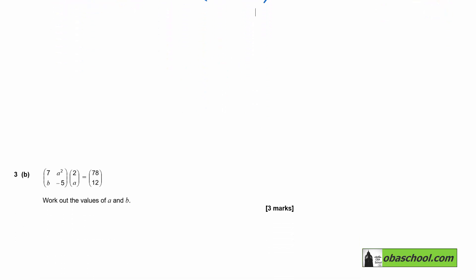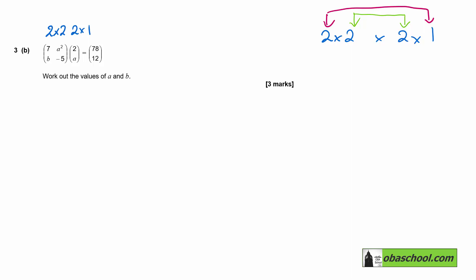So now let's look at three part B. Seven, a squared, B, negative five times two, eight is equal to 78, 12. Now the first matrix is a two by two, and the second one is a two by one. So if we have a two by two matrix and we multiply it by a two by one matrix like this, first of all, the middle numbers being the same means we can do it. And then the outside numbers mean that the product matrix is a two by one.